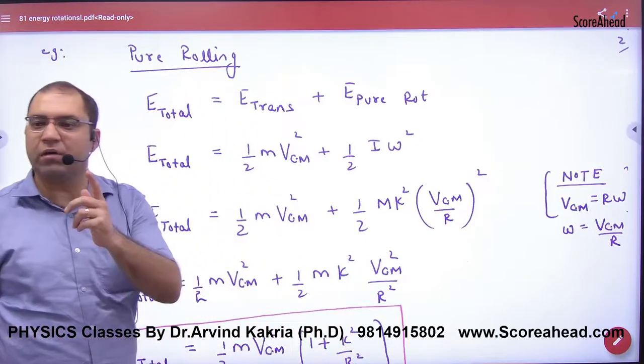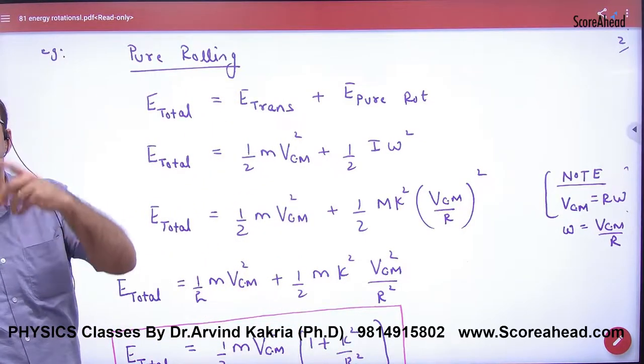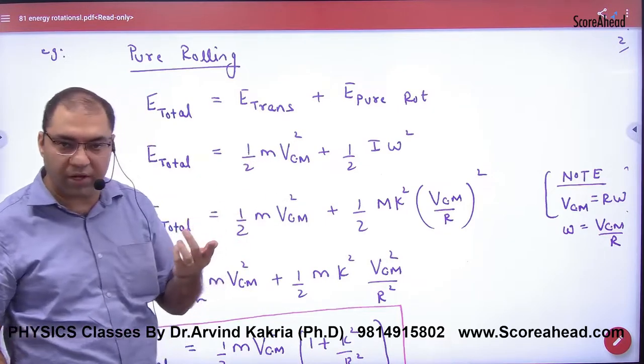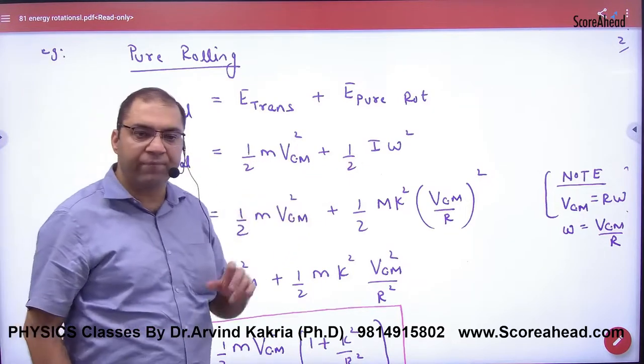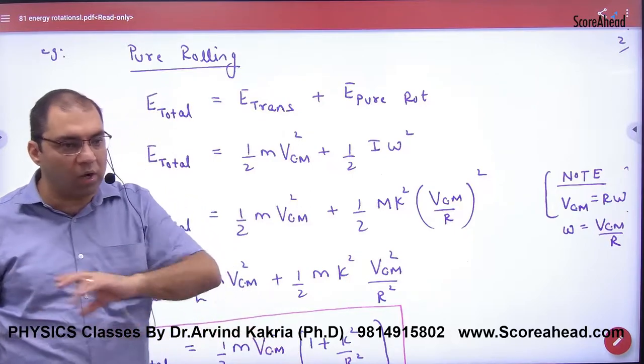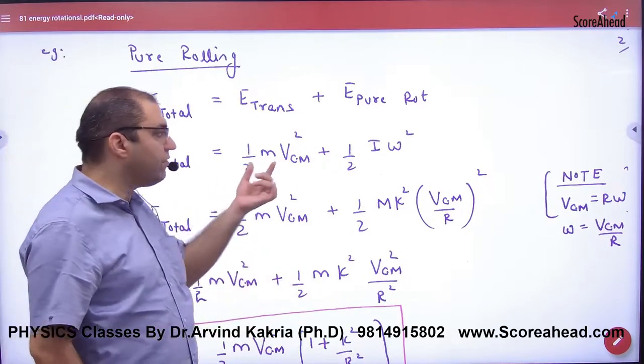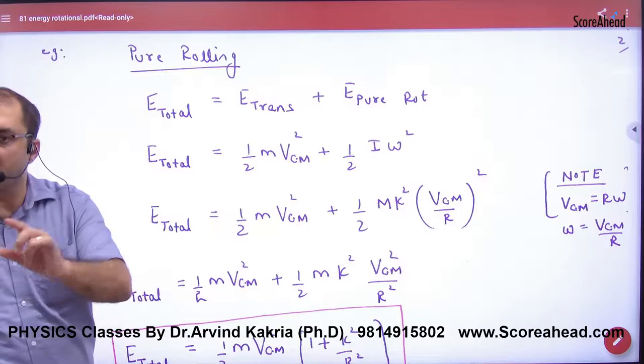What do we have for translation? In the center of mass, it's ½mV_cm². And in rotation, ½Iω². So when someone rolls, total energy is the sum of translation as well as pure rotation energy. Clear?